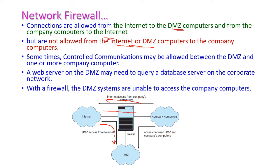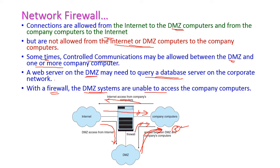Some communications are not possible, but sometimes controlled communications may be allowed between the DMZ and one or more company's computers. However, DMZ computers cannot access all company computers. For example, a web server on the DMZ may need to query a database server on the corporate network. Within the firewall, DMZ systems are generally unable to access company computers directly.